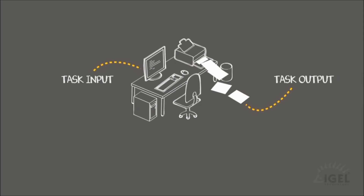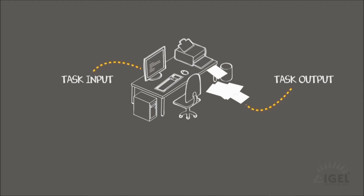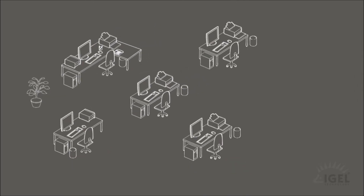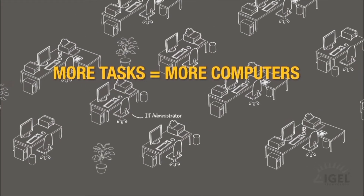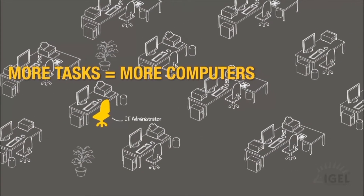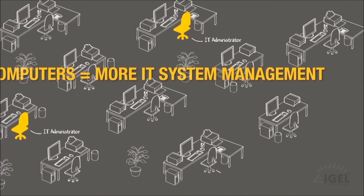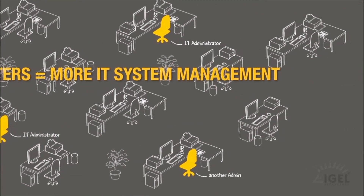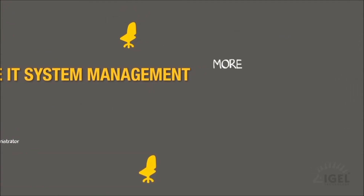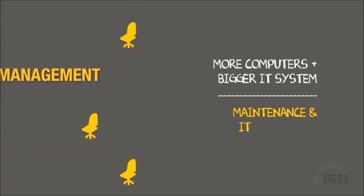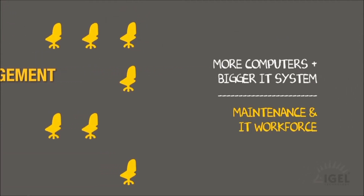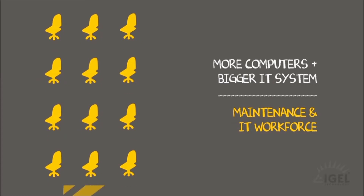This is an ordinary thin client, zero client, or PC running the daily tasks of a small new entity. As the entity grows, so do the tasks, and so does the number of thin and zero clients and PCs. And as the IT grows, so does the need to manage and administer the IT. The bigger the business, the more maintenance the IT needs in order to cope with all the tasks.